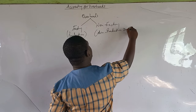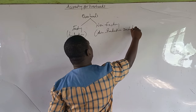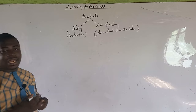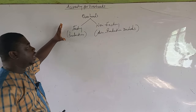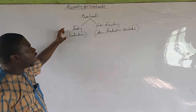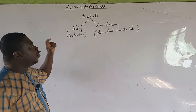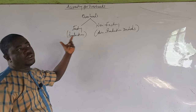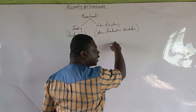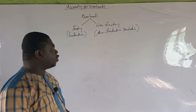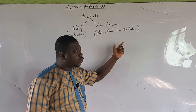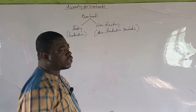Factory overheads are overheads incurred in the factory and are part of the production process — they form part of production costs. Non-factory overheads, however, are not part of production costs. They form part of total costs but not part of production costs.